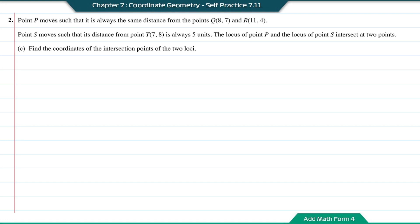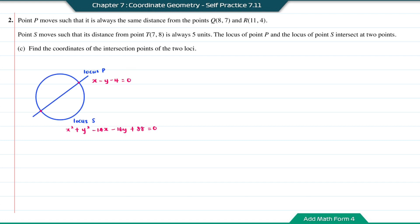Question C: find the coordinates of the intersection points of the two loci. From question A, the locus of P is the straight line x minus y minus 4 equal to 0. From question B, the locus of S is the circle x squared plus y squared minus 14x minus 16y plus 88 equal to 0. To find the two intersection points, we solve using simultaneous equations. Let equation 1 be the locus of P and equation 2 be the locus of S. From equation 1, x equals y plus 4, which is equation 3.